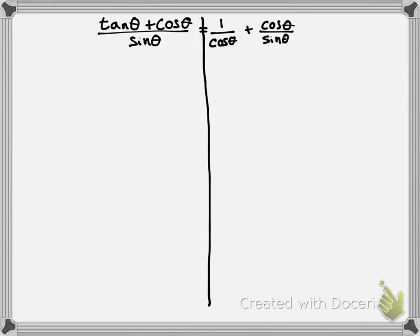The first thing I notice is that on the left side I have one big fraction, and on the right side I've got two fractions being added together. So what I'm going to try to do is work on the left side and turn that into two fractions. Since both tangent of theta and cosine of theta are being divided by sine of theta on the left side, I'm going to divide them each individually by sine of theta. So that's going to look like tangent of theta divided by sine of theta, plus cosine of theta divided by sine of theta — which looks a little bit more like the right side.